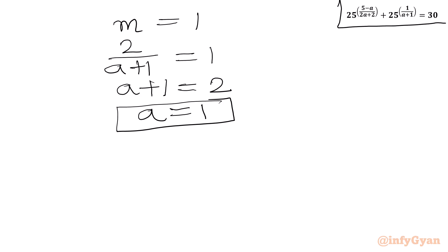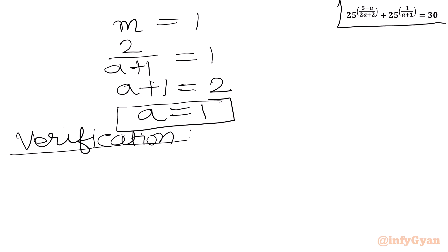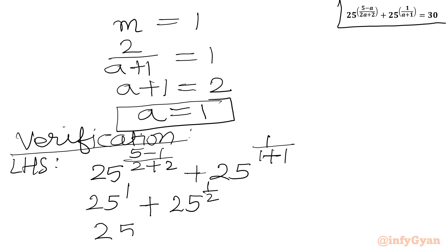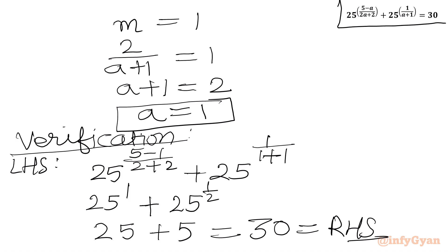We will verify our result with a equal to 1. Writing LHS: 25 to the power (5 minus 1) over (2 times 1 plus 2) — that is 25 to the power 4 over 4 — plus 25 to the power 1 over (1 plus 1). This gives 25 to the power 1 plus 25 to the power 1/2, which equals 25 plus 5, equal to 30. And 30 is our RHS, so our solution is verified.